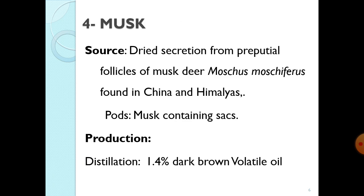The fourth drug obtained from an animal is musk. Its source is the dried secretion from the prepucial follicles of the musk deer. Its scientific name is Moschus moschiferus, which is found in China and the Himalayas. Musk is basically a dried secretion from the follicles of the reproductive organs of the musk deer.